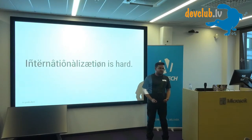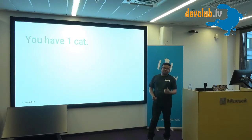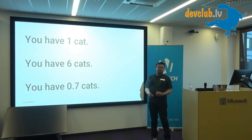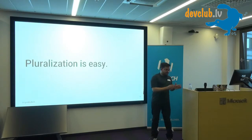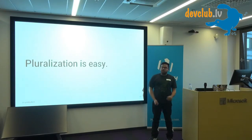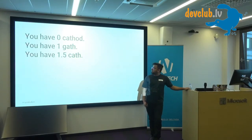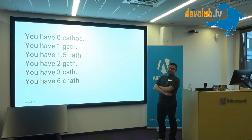Internationalization is not just currencies — it's also pluralization. We all love cats. You have one cat, you have six cats, and you have 0.7 cats — I don't quite know how that works, maybe you have ten roommates. Pluralization is easy, right? If it's one, it's singular; if it's anything else, it's plural. You have zero cats, 0.7 cats, but one cat. Let's talk about Welsh cats — zero cathod, one cat, 1.5 cat, two cat, three cat, six chat, and 42 cat. Welsh has like seven rules for different amounts of things.